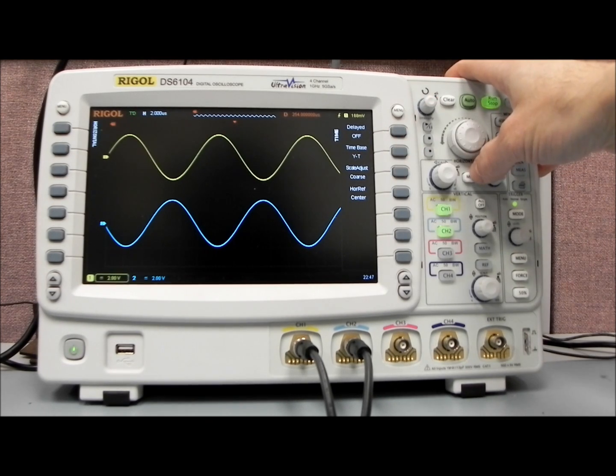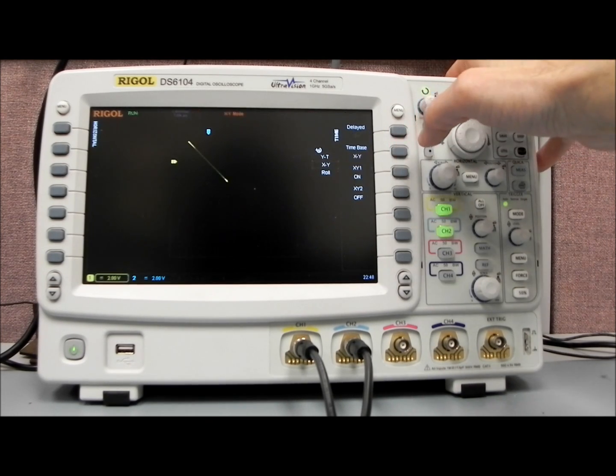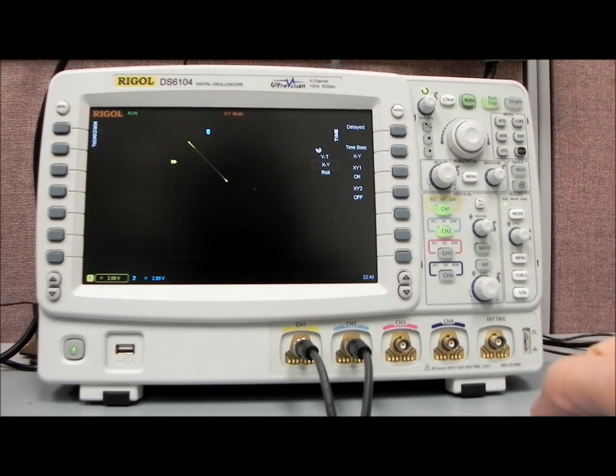And so we go to menu in the horizontal and we change the time base to X versus Y. And now you'll see that we have a line that's been drawn. The reason that we have a line is, again, this is channel 1 versus channel 2 being plotted.